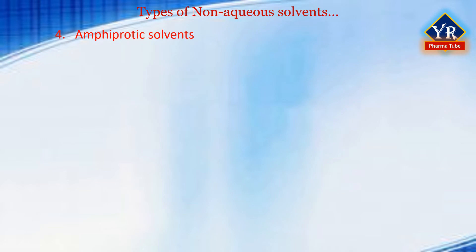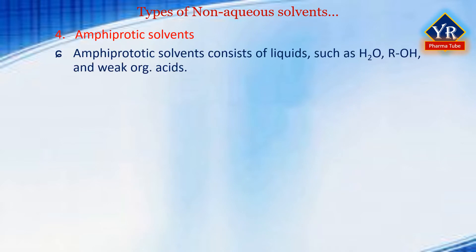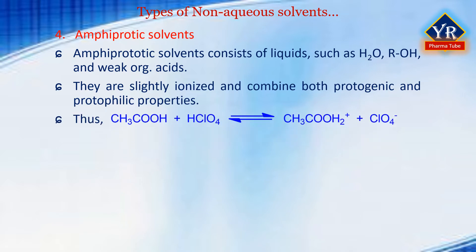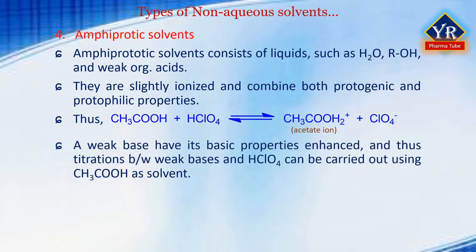Amphiprotic solvents consist of liquids such as water, alcohols, and weak organic acids which are slightly ionized and combine both protogenic and protophilic properties in being able to donate and to accept protons. Thus, acetic acid or ethanoic acid displays acidic properties in dissociating to produce protons. The acetate ion so formed can very readily give up its proton to react with a base. A weak base therefore will have its basic properties enhanced and as a consequence, titrations between weak bases and perchloric acid can frequently be readily carried out using acetic acid as a solvent.